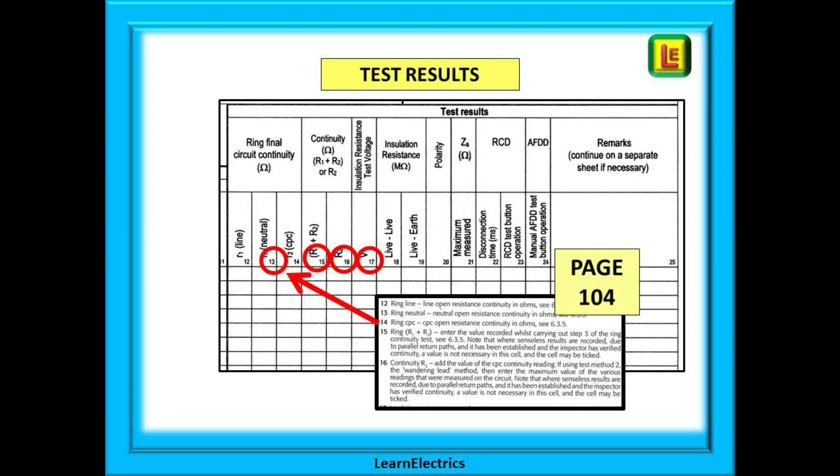Enough of numbering systems. Back to filling in the schedule. The test results box on the schedule can now be completed. Page 104 of the electrician's guide will help you with the explanations for each column as before.